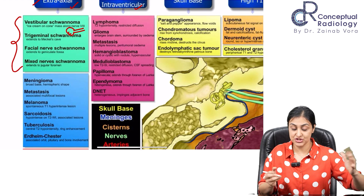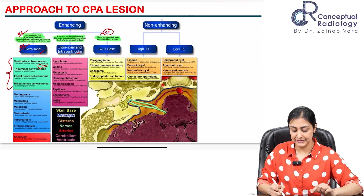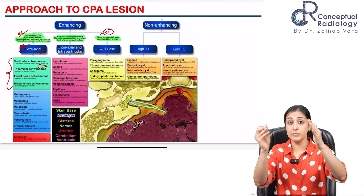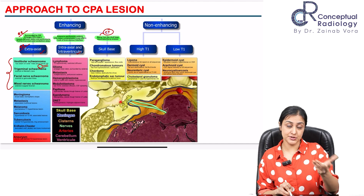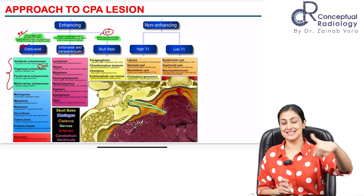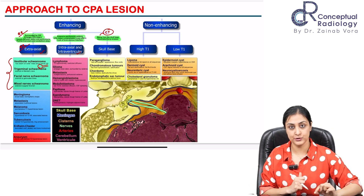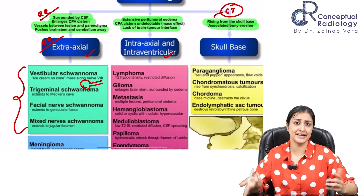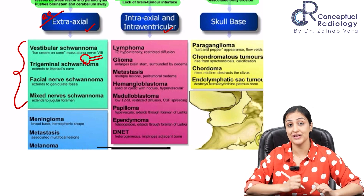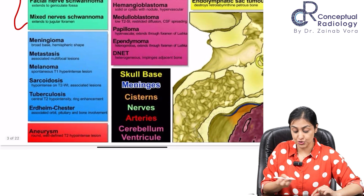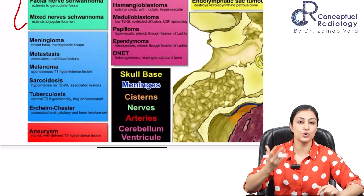For extra-axial lesions, the differentials are primarily neurogenic tumors. Vestibular schwannoma has the classic 'ice cream cone' shape — intra-canalicular extension plus the cisternal component. Trigeminal schwannoma extends anteriorly towards Meckel's cave in a dumbbell shape. Facial schwannoma extends into the inner ear, travels through the middle ear, and exits at the stylomastoid foramen — this temporal bone extension helps diagnose it. Mixed cranial nerves 9 and 10 arise from the jugular foramen, so the epicenter will be there.